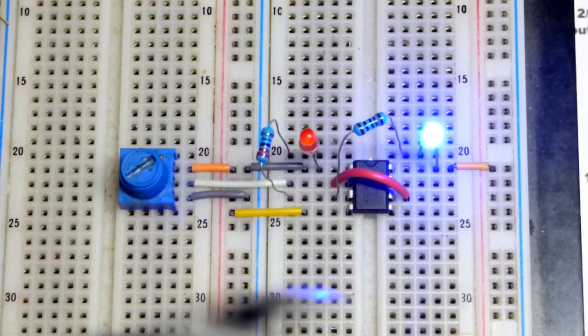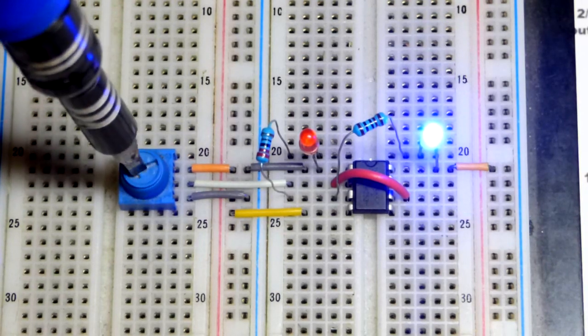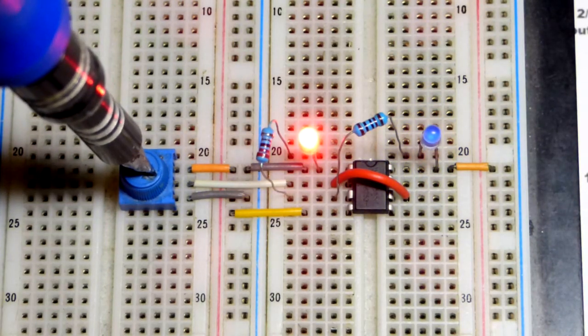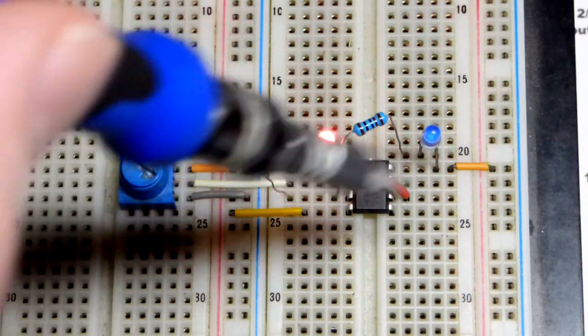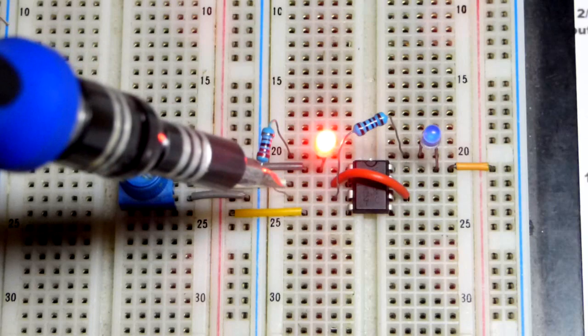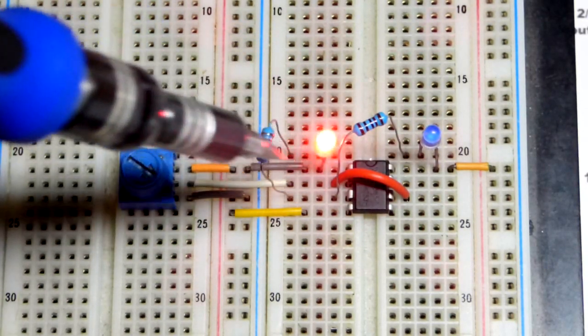If I turn the trim pot towards the negative supply, now you see the red LED lights up. The output's now high, about 4.5 volts. You lose about a volt and a half, but it's lighting up the LED going to ground. The output is high, that's the main thing.